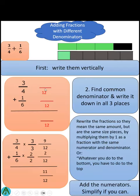Let's go through the steps again. First, write the problem vertically, then find a common denominator, put that in all three places. Then figure out what to multiply by to get the new denominators, and multiply the numerator by that too to get the new numerators. Add the numerators, keep the denominator, simplify if you can. That's it.